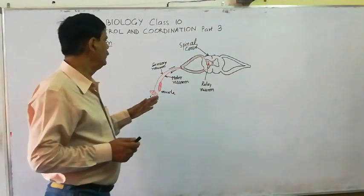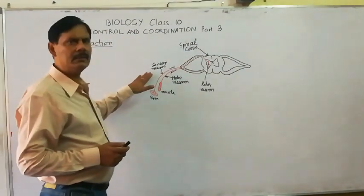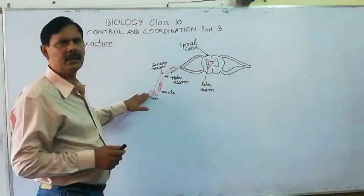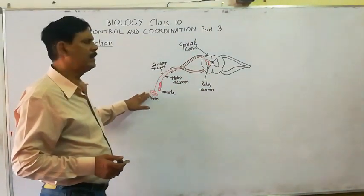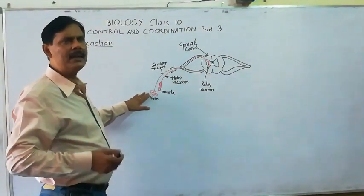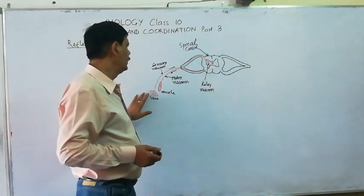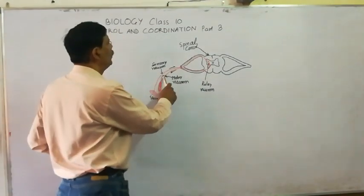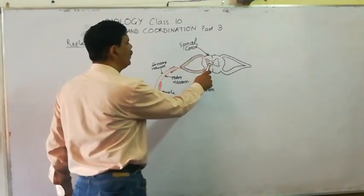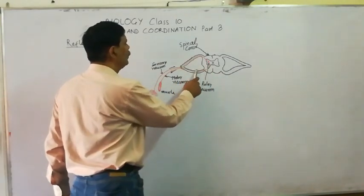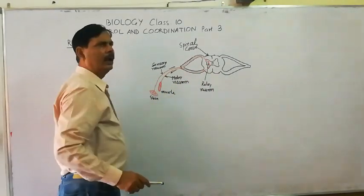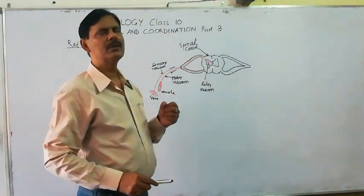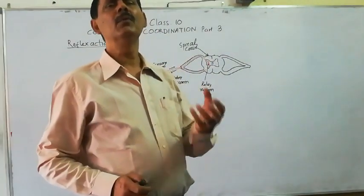Now, what happens? The sensory nerves are associated with the skin receptors. From the receptor, the impulse is picked up and passed through the sensory neuron, through the spinal cord, where it is passed on to the motor neuron. The motor neuron leads on to the muscles, and by the contraction of the muscles, your hand is suddenly removed from the hot water.